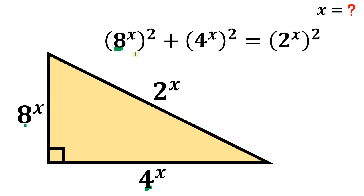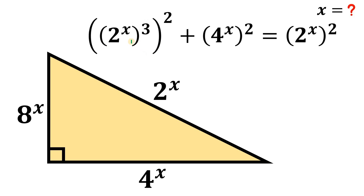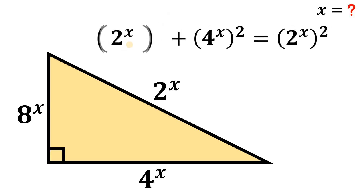We can rewrite 8 as 2 raised to the power of 3, because 2 times 2 times 2 equals 8. So 2 raised to the power of 3, raised to the power of x, can be rewritten as 2 raised to the power of x, raised to the power of 3. This gives us a common term of 2 raised to the power of x. Using laws of exponents, we multiply 3 and 2, giving us 2 raised to the power of x, raised to the power of 6.